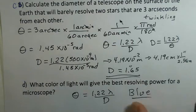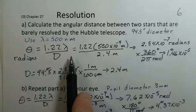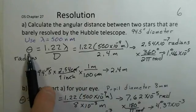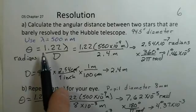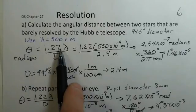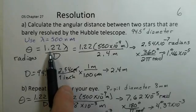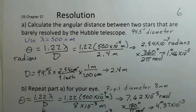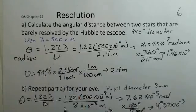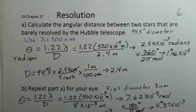Our prime discussion here: resolving power, the angle that the objects have to be separated, is calculated with 1.22 lambda over D. This 1.22 comes from the shape of the opening being a circle rather than a rectangular slit. Wavelength of the light, diameter of the opening, radians. Must use radians for the theta. So keep practicing. Ask your instructor some questions.